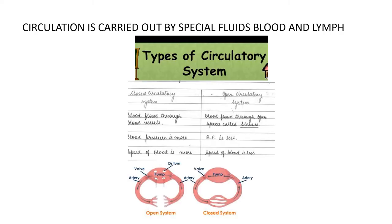Moving on to the next part of the chapter, which is circulation. Circulation in humans and animals is carried out by a special fluid called blood. There are two types of circulation: closed circulatory system and open circulatory system. In a closed circulatory system, blood flows through the blood vessels. In an open circulatory system, the blood flows through an open space called sinuses.